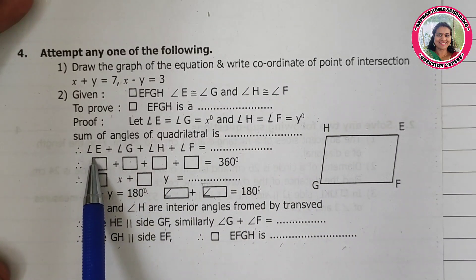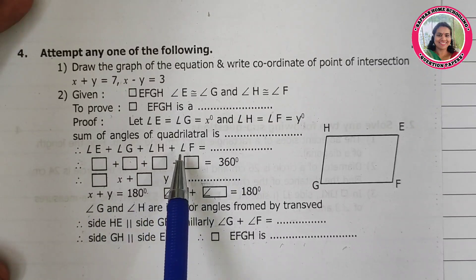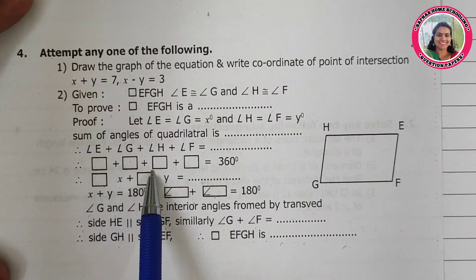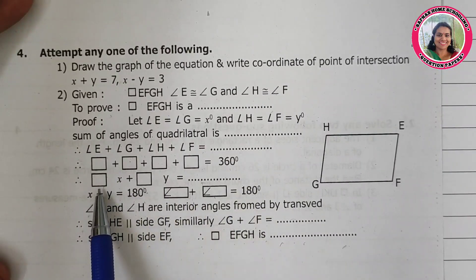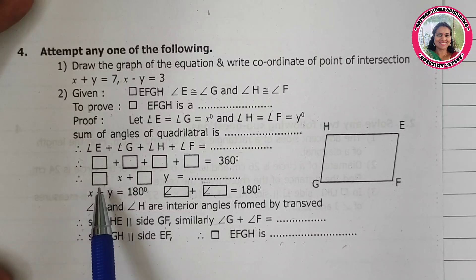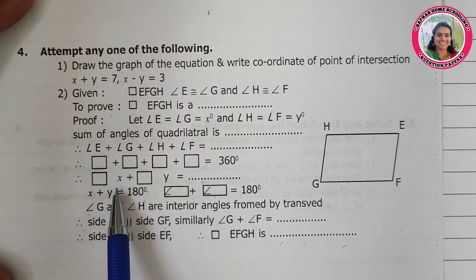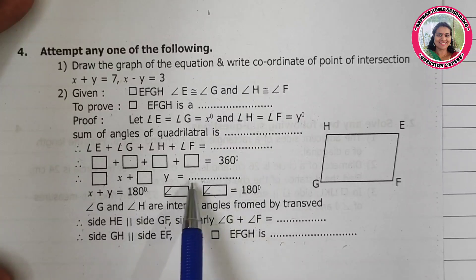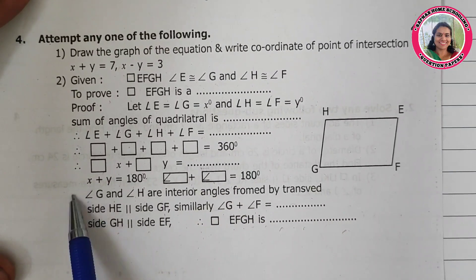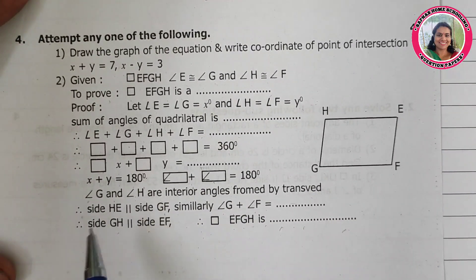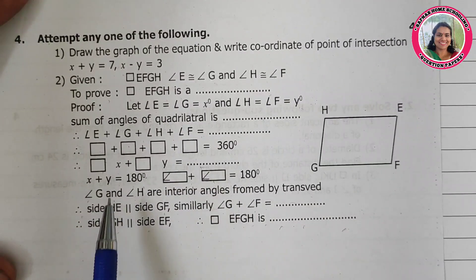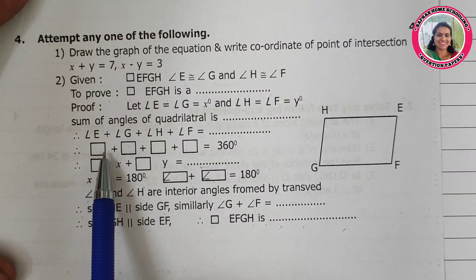Sum of the angles of the quadrilateral is 360 degrees. So angle E plus angle G plus angle H plus angle F equals 360 degrees. This gives us x plus x plus y plus y equals 360, so 2x plus 2y equals 360 degrees, which means x plus y equals 180 degrees.